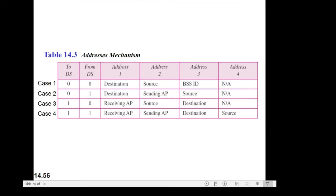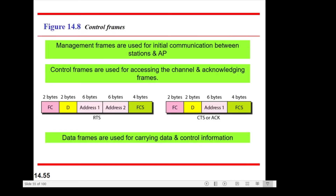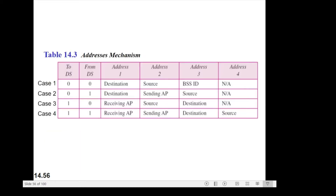Assalamualaikum and hi to everyone. Thank you for watching this video. In the previous video we already discussed about the neural type of frame, where we have several frames and several segments inside the frame. For this video we talk about the addressing mechanism in IEEE 802.11. Based on the IEEE standard, there are four cases for the addressing mechanism.